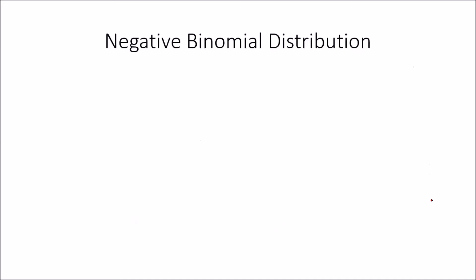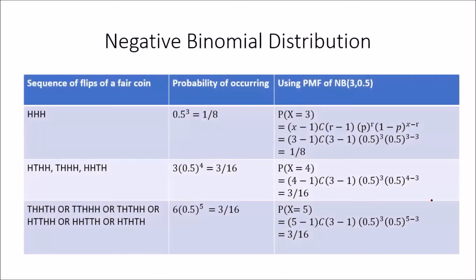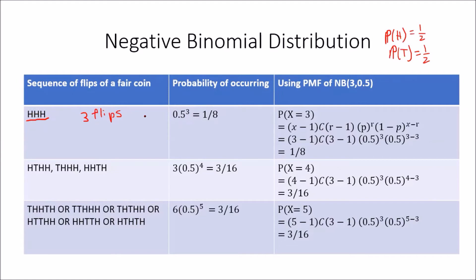Let's look at an example of the negative binomial distribution. Consider a sequence of flips of a fair coin, so the probability of a head is 0.5 and the probability of a tail is also 0.5. Starting with three flips, we want the third success on the third flip — three successes in total. In three flips, there's only one sequence that can generate that: heads, heads, heads. The probability of that occurring, assuming independence, is 0.5 to the power of 3, which is one eighth.